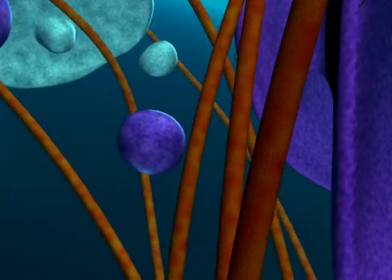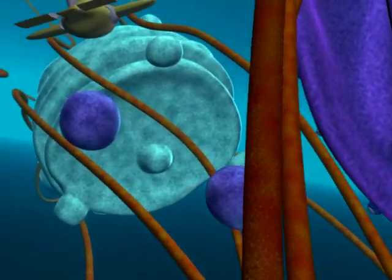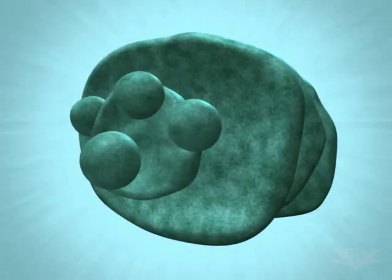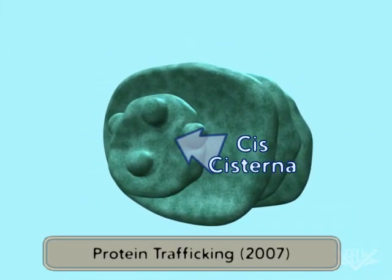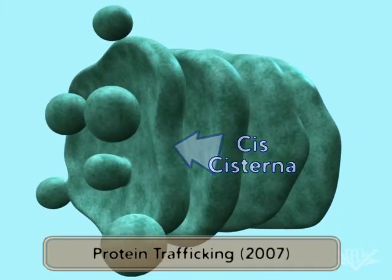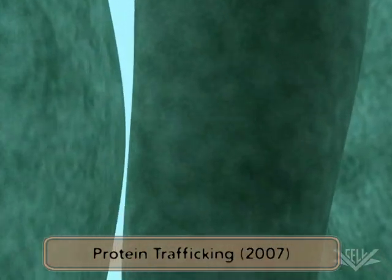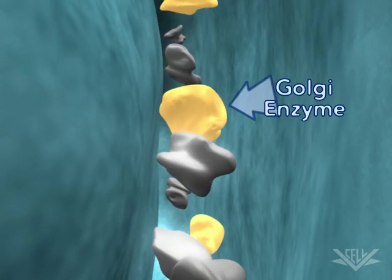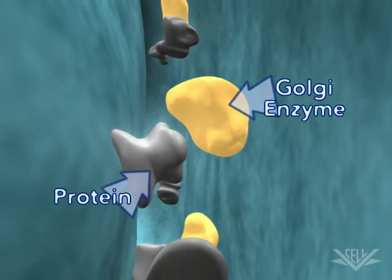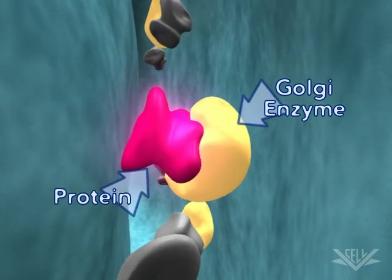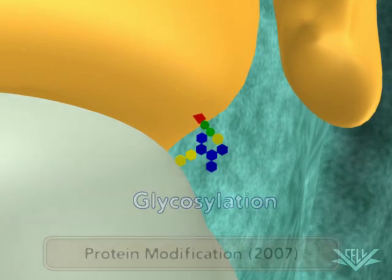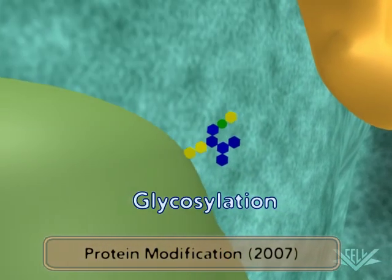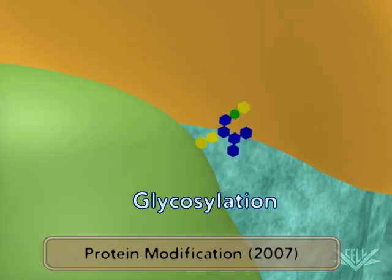Those proteins can be packaged into vesicles, which depart the ER and migrate to the Golgi apparatus. Here, the vesicles merge to form a Golgi cisterna, with the proteins located inside the cisterna's membrane. As the cisterna matures, enzymes inside can modify the protein.